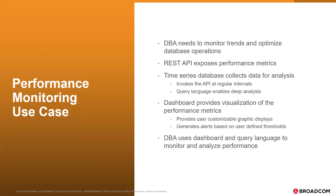Administrators for online systems need to monitor operations to see trends and recognize unusual conditions that can indicate problems. A time series database provides a way to collect performance and operational metrics. It can invoke an API that exposes this data at regular intervals and stores the time slice data for analysis. Dashboards are a powerful way to visualize the time series data and recognize anomalous events occurring in real time, so an administrator can use the dashboard and database query tools to monitor and analyze performance.